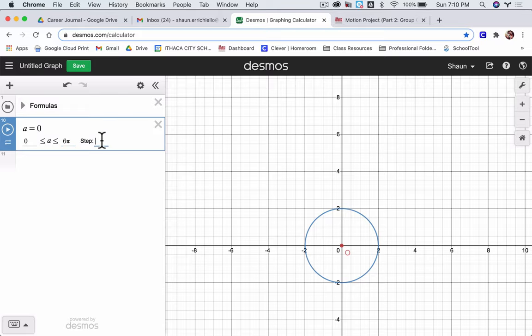If I want the increments to be, let's say, pi over 4, I would type pi slash 4.